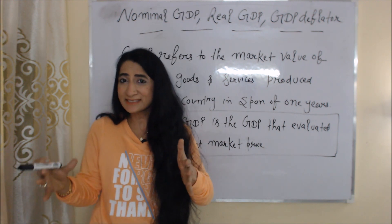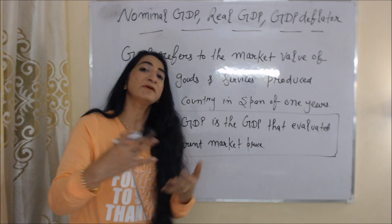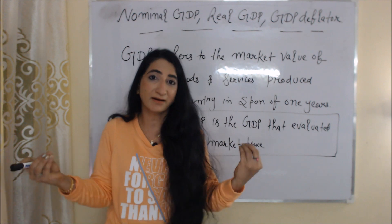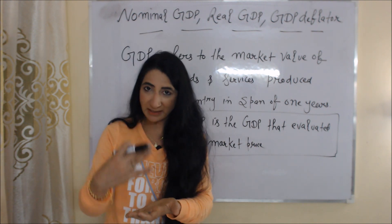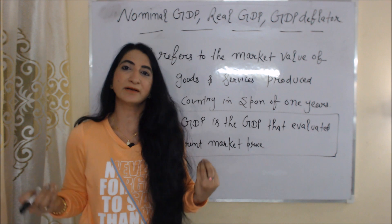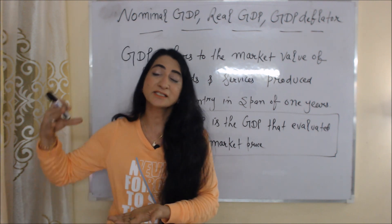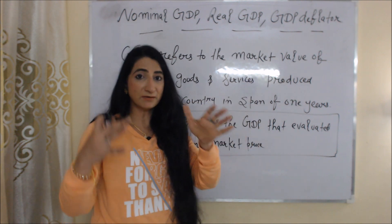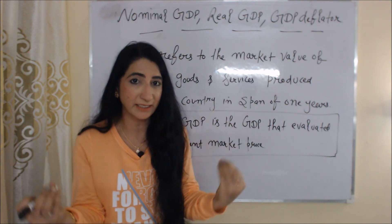So what is GDP? GDP refers to the market value of final goods and services produced within a country in a span of one year. Market value means the price at which we can sell our product in the market.